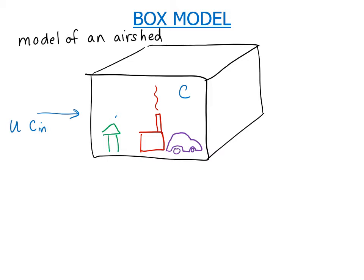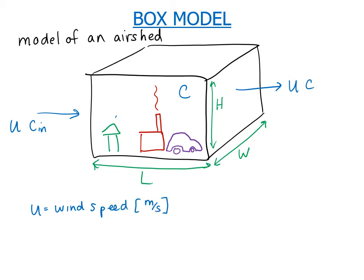There's some concentration entering C_in. And then downwind, we have that same wind velocity and some concentration that's leaving. We're going to add dimensions to this box where the height is H, the length is L, and the width is W. U is our wind speed in meters per second. And let me add term E, which is our emission rate, or the source term, which will be mass per time, or grams per second.